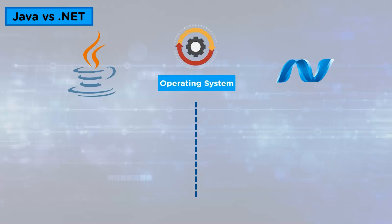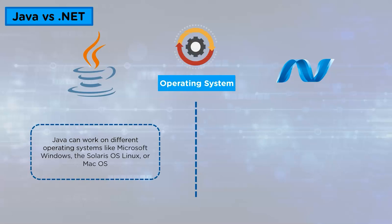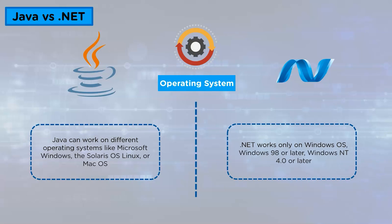Operating System: Java can work on different operating systems like Microsoft Windows, the Solaris operating system, Linux, or Mac OS. Whereas .NET works only on the Windows operating system, i.e., Windows 98 or later, and Windows NT 4.0 or later.